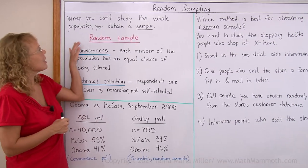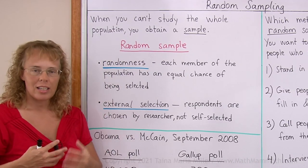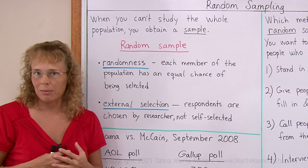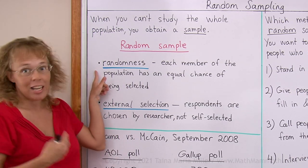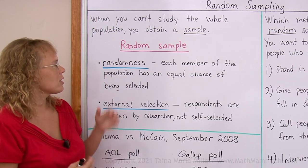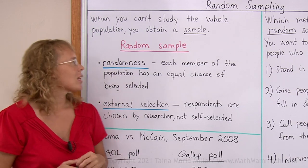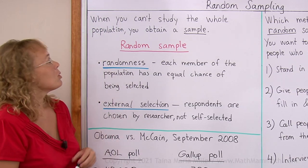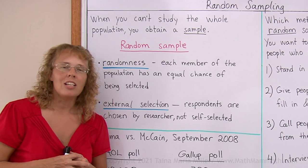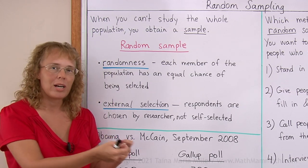We are studying random samples. What is a random sample? There are two important requirements for a sample to be a random sample. One is randomness: each member of the population has an equal chance of being selected to the sample. When you are choosing a sample, you need to use some kind of random method of choosing those that will be part of the sample.